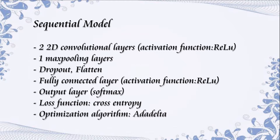The optimization algorithm we use to minimize our loss function is Adadelta. Adadelta is an extension of Adagrad that seeks to reduce its aggressive monotonically decreasing learning rates. Instead of accumulating all past squared gradients, Adadelta restricts the window of accumulated past gradients to a fixed size w. The sum of gradients is recursively defined as a decaying average of all past squared gradients. With Adadelta, we do not even need to set a default learning rate, as it has been eliminated from the update rule.